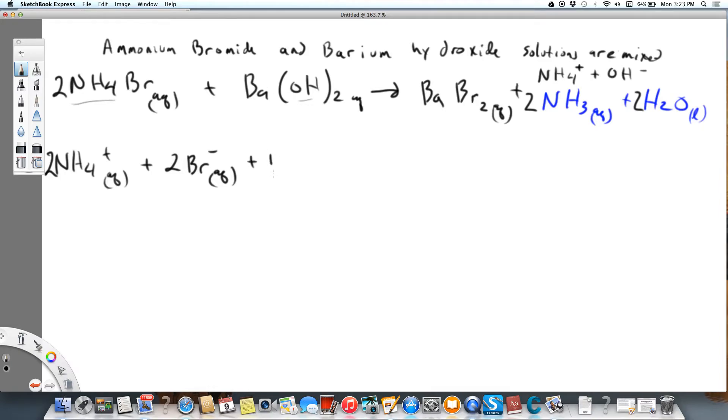And then we're going to take barium, which is aqueous and positive two, and then two hydroxides. And then barium is aqueous with bromide. And we're going to keep the ammonia as NH3, that's aqueous, plus water, which of course is liquid.